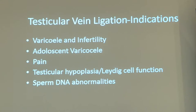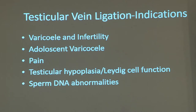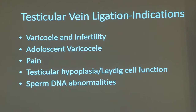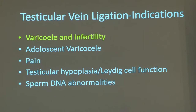The treatment of testicular vein ligation is essentially used for varicocele and infertility, and that is something which is well known to us. There are indications for use in adolescents with varicocele. Pain is an unusual indication for doing this procedure in less than 10% of men. There are also some controversial indications — whether it can be used with differential testicular size, whether to improve Leydig cell function, and more recently with men with normal semen parameters and sperm DNA abnormalities. We will limit our talk to varicocele and infertility, and I will touch on some of the other aspects through my talk.